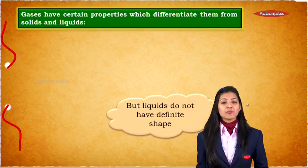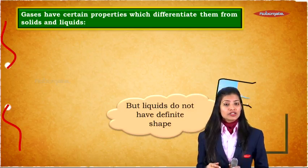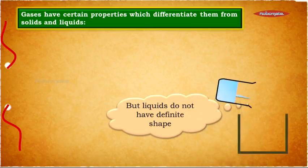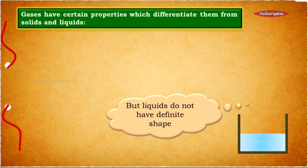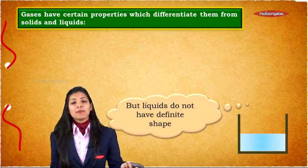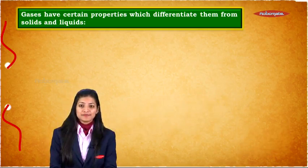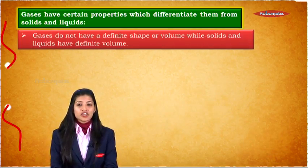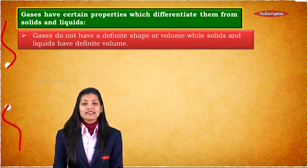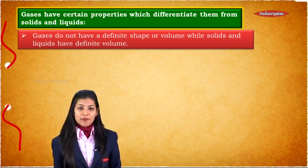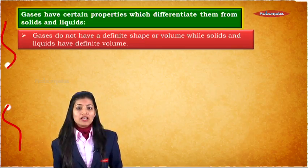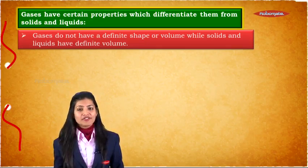Whereas if we are talking about liquids, liquids they do not have definite shape but they do have definite volume. Why? Because they take the shape of the container. Hence, no definite shape but the amount always remains the same, so the volume is fixed. Whereas if we are talking about gases, gases do not have a definite shape or volume while solids and liquids have definite volume.